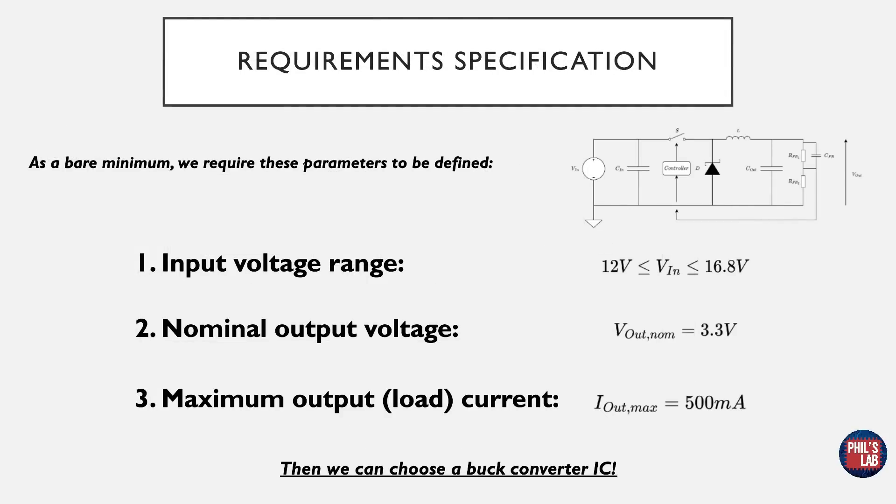Now that we've briefly gone over the elements of a switching converter, we need to define certain parameters which are application specific. First of all, we might have a necessary input voltage range, and in an example I'd like to show you, this input voltage range for this application specifically is 12 volts minimum to a maximum of just under 17 volts. We also need to know a nominal output voltage, and that in my case is 3.3 volts that I would like. We also need to know what our maximum output or load current will be. So in my application I require something around 500 milliamps. So the input voltage range, nominal output voltage, and output current or load current give us, as a bare minimum, the specifications for us to be able to choose a buck converter integrated circuit.